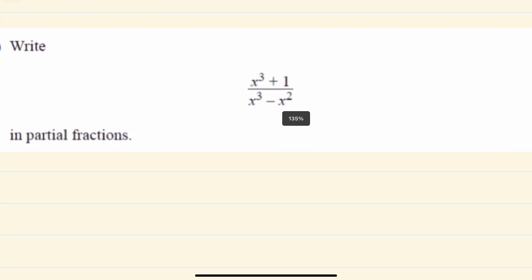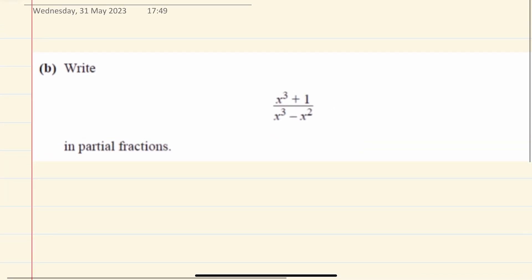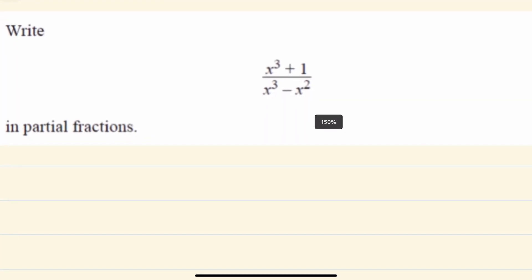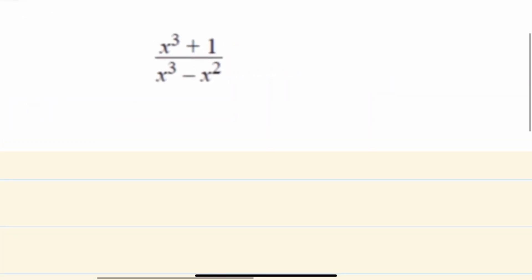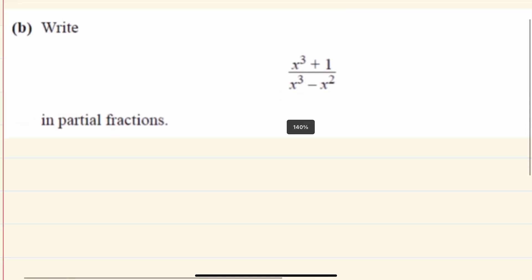This question is a partial fractions question — it says write this expression in partial fractions, and then the next part would be to integrate it. So we'll do the partial fractions bit first. The first thing you've got to do is check the order of the bottom line. The highest power of the bottom is three and the top is also three, so if the order of the bottom is greater than or equal to the top, you must first divide. I like to do it by polynomial long division.